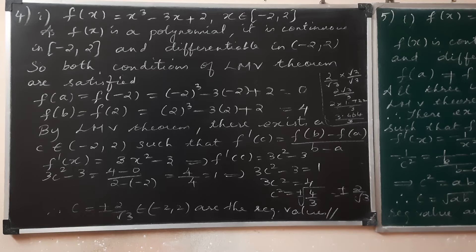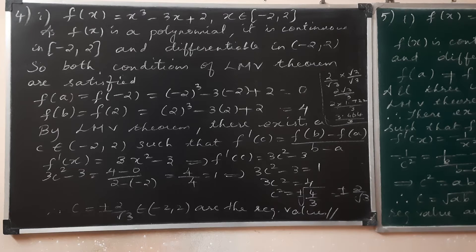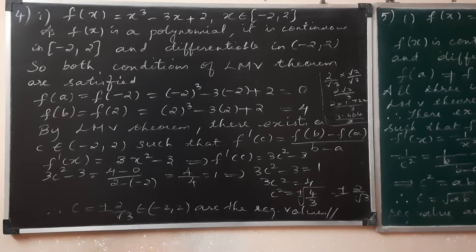If that is the case, then in between a and b there is one particular x value, and at the point of the curve there is a tangent which is parallel to the secant line. This is what the theorem states.